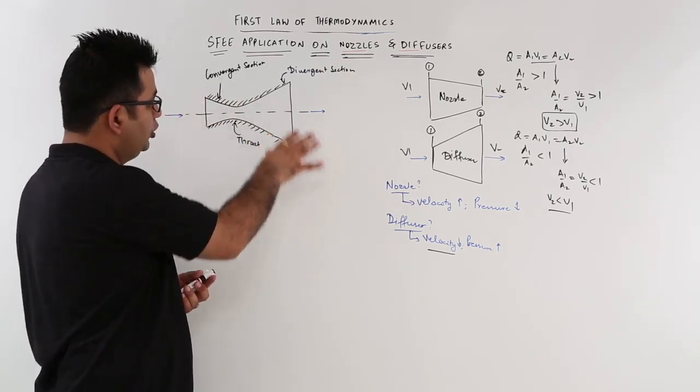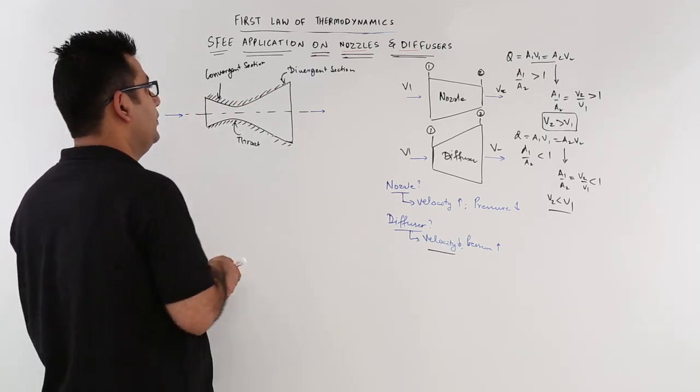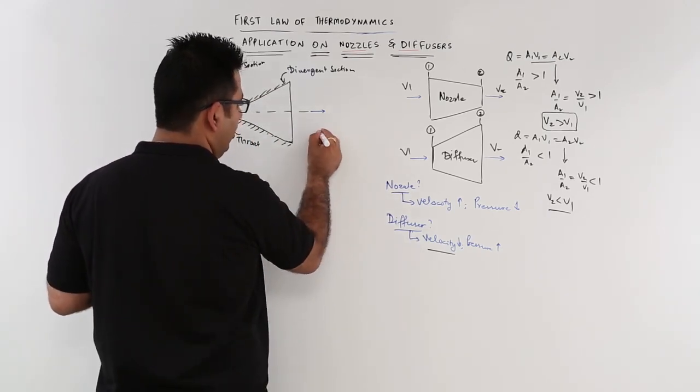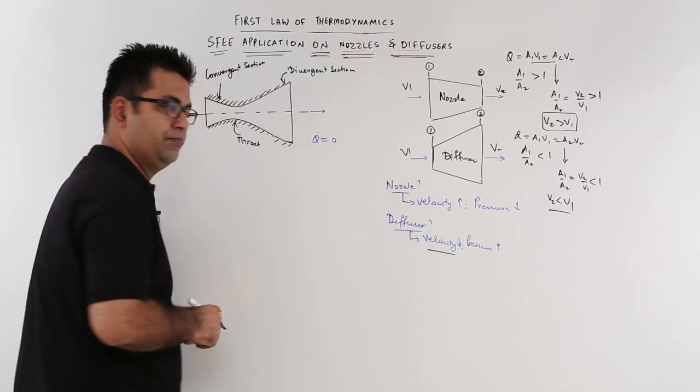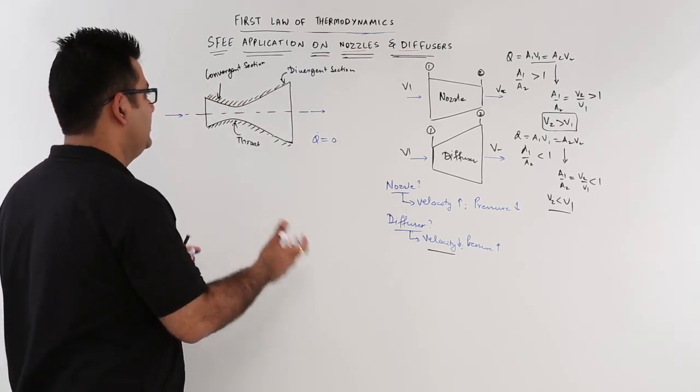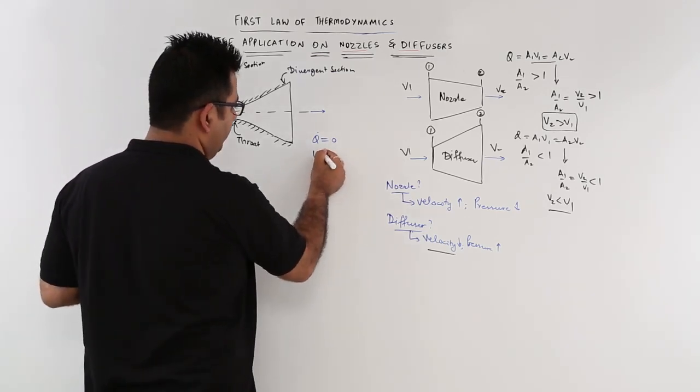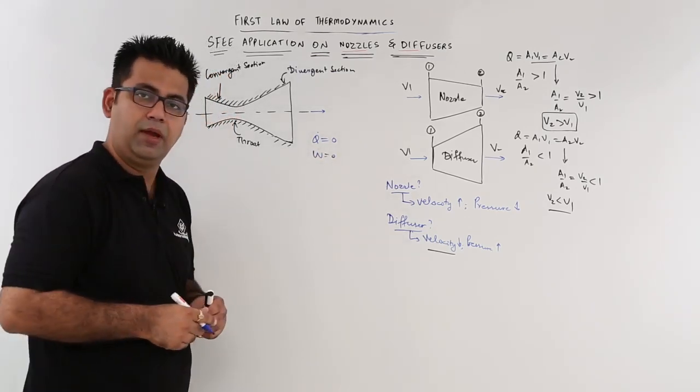Now, the nozzle is insulated. So because it is insulated from the outside, the heat loss is zero. And because it is a nozzle, there is no perceivable, usable work output from it. So work output is also zero.